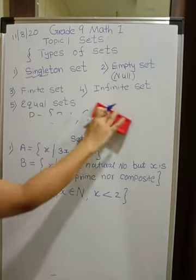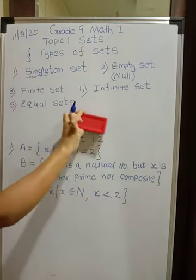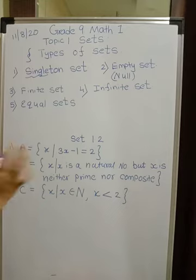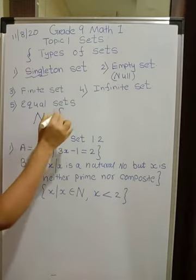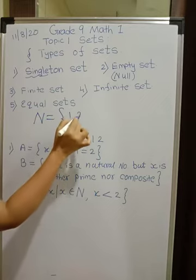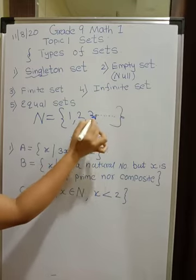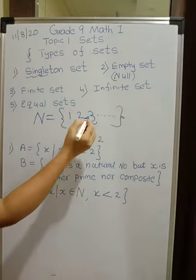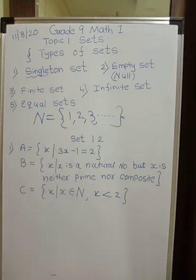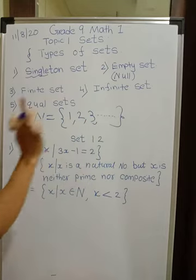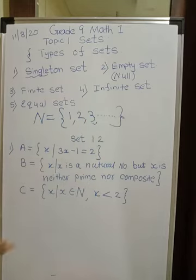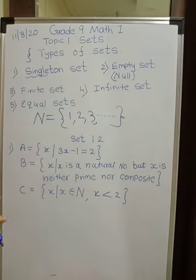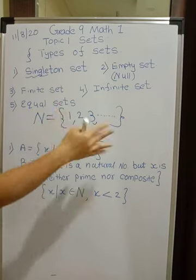Infinite means the elements are not finite — the number of elements in the set is unlimited, uncountable. For example, N is the set of natural numbers: 1, 2, 3 and so on with dots indicating it goes endlessly. We can't say how many elements are present because there are unlimited numbers. The set of natural numbers, set of whole numbers, and set of integers are all infinite sets — there is no end, we cannot count them.